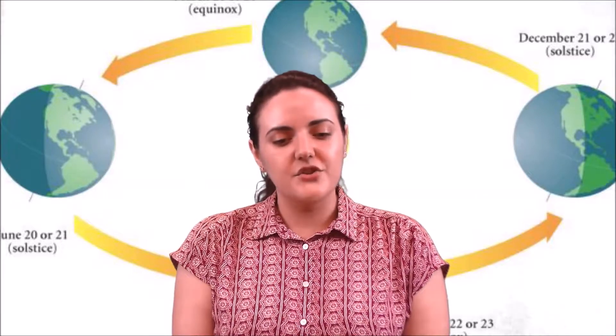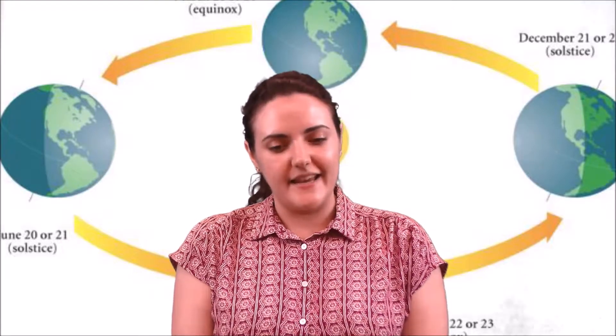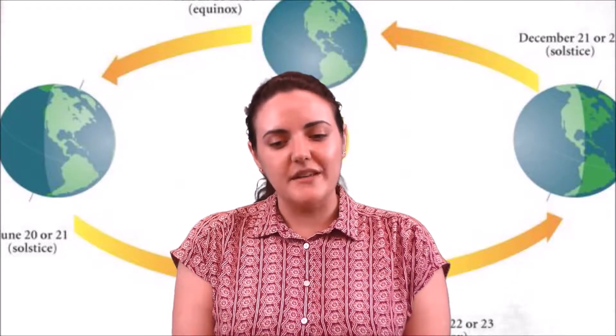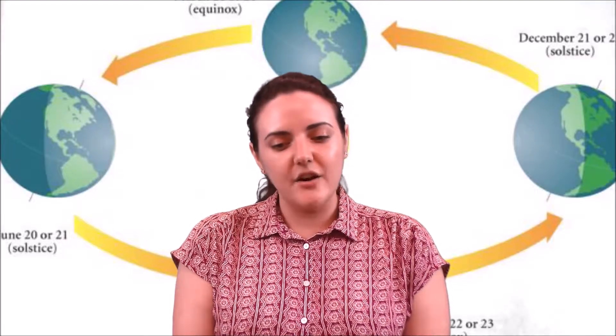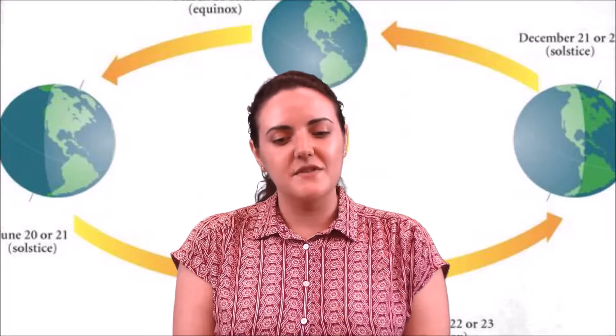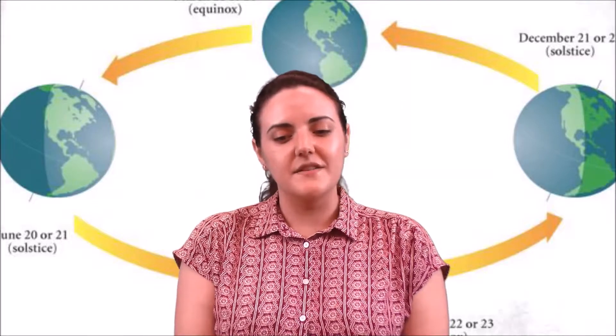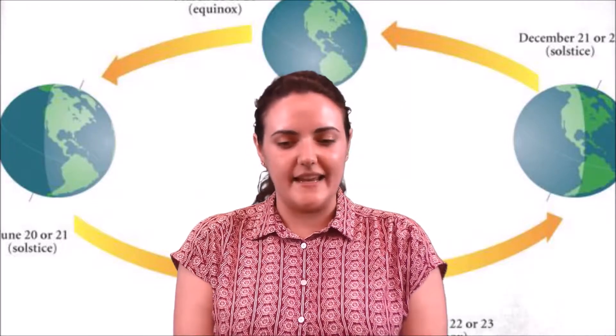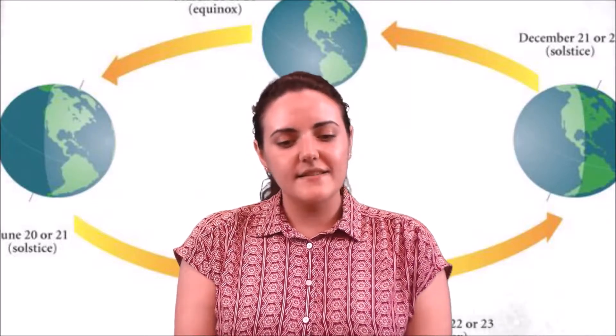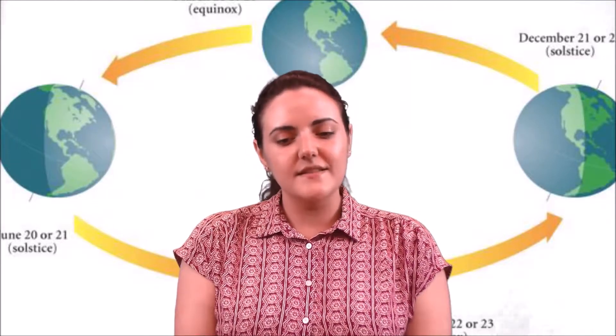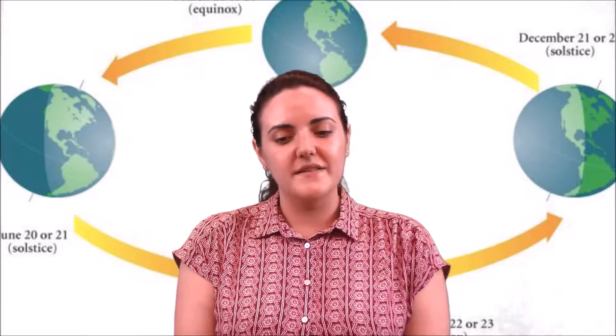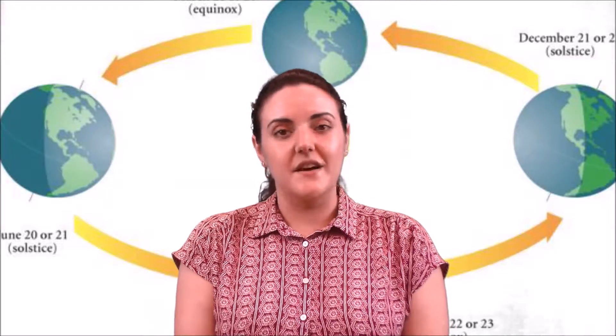The day this occurs is called the June solstice day. Similarly, for an observer on the south pole, the sun reaches the highest position on the December solstice day. When it is the summer solstice on one pole, it is the winter solstice on the other.